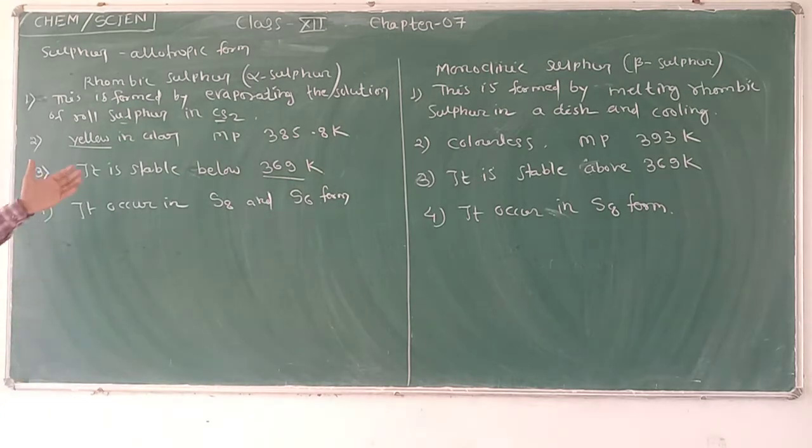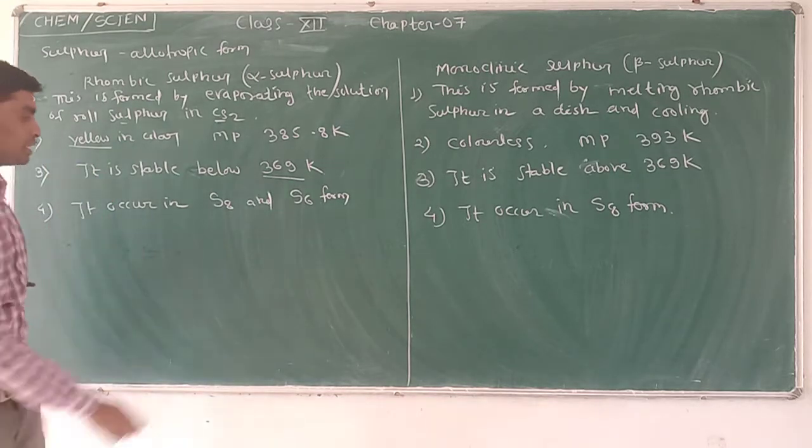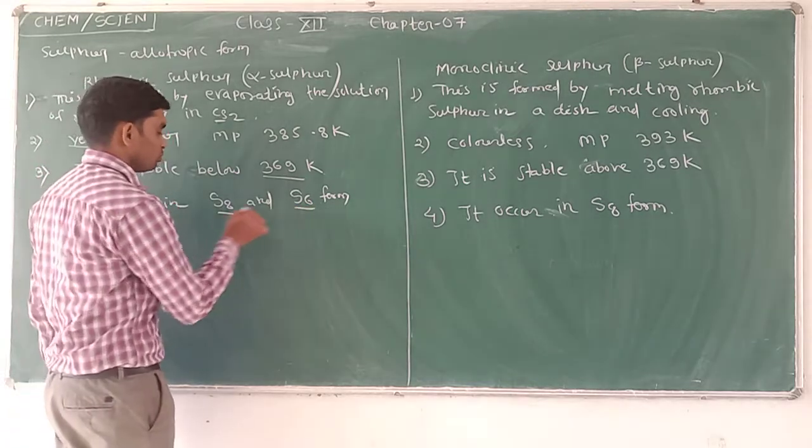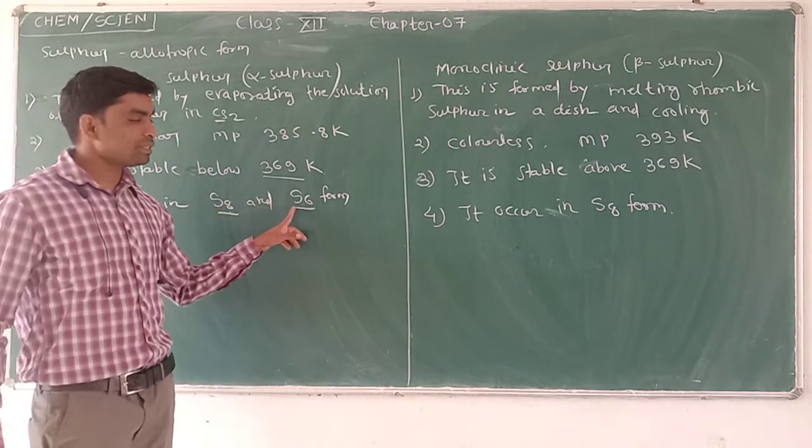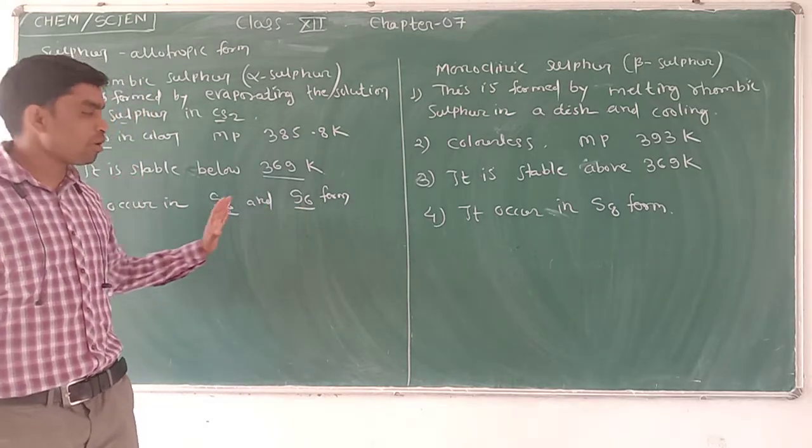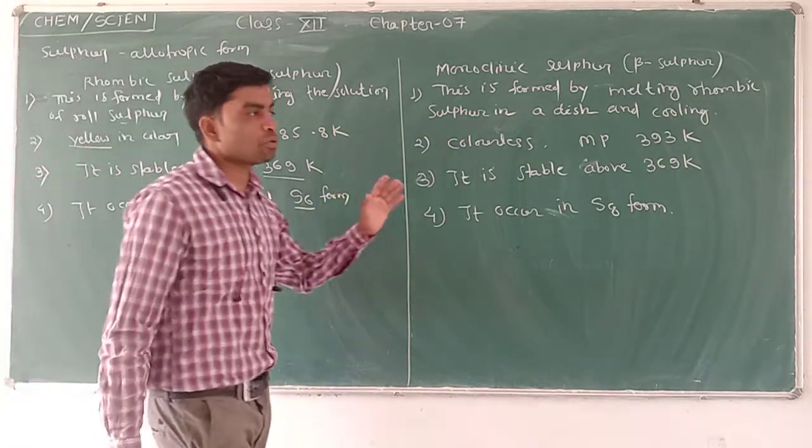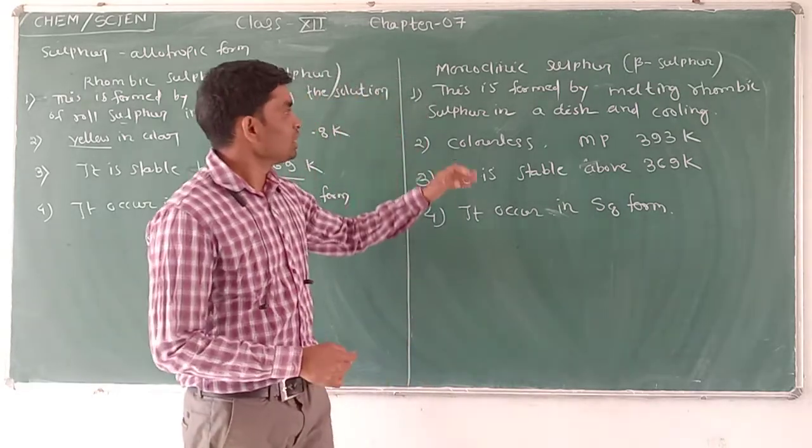In alpha sulphur, two forms are present: S8 is the main form and S6 is the second form present. Monoclinic sulphur, also called beta sulphur, is prepared by melting rhombic sulphur.